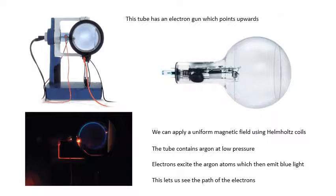This is a Teltron tube, an evacuated tube. This type has an electron gun which points upwards, so it can fire electrons upwards. You get these big coils called Helmholtz coils, which are designed to produce a uniform magnetic field. You can get your electrons going around in a circle.